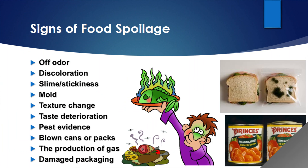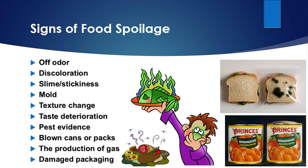These are the signs of spoilage: bad odor or smell, discoloration, sliminess, stickiness, mold or fungus growth, texture change — for example, who wants to eat a soggy cracker? It's a spoiled food; basically nobody wants to eat it. Also taste deterioration or taste change, like sour milk, pest evidence, blown-up cans or packs, production of gas, and damaged packaging. All of these are signs of spoilage and they make food waste.